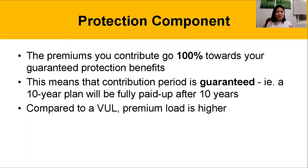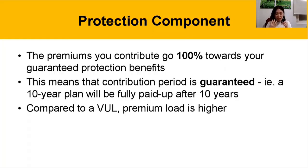The basic premise here is that with the UL plan, you're investing into a fund, and you're hoping this fund is enough to sustain the plan. With the endowment plan, you're putting into the plan at a certain specified guaranteed period, and then the plan will really exist and be sustained until age 100.